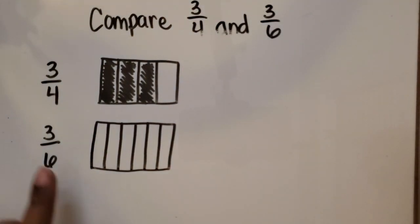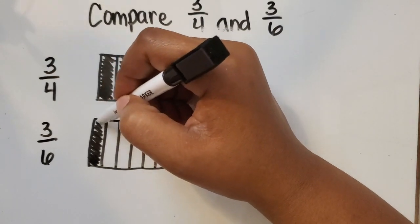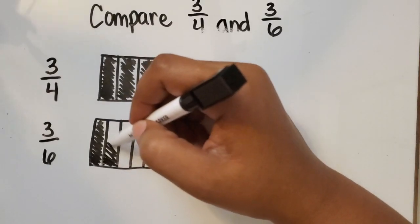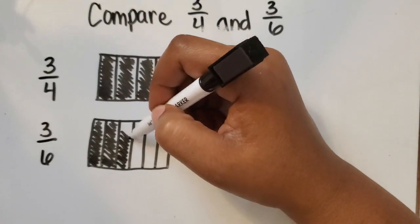For our second model we have 3 sixths, so out of the six equal parts, 3 will be shaded in: 1 sixth, 2 sixths, 3 sixths.